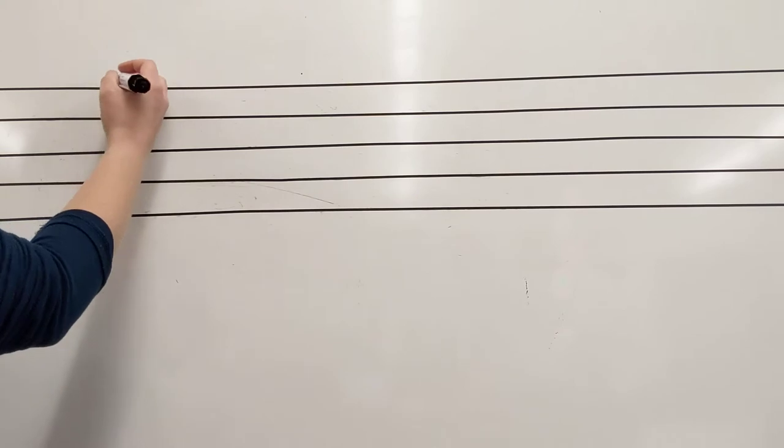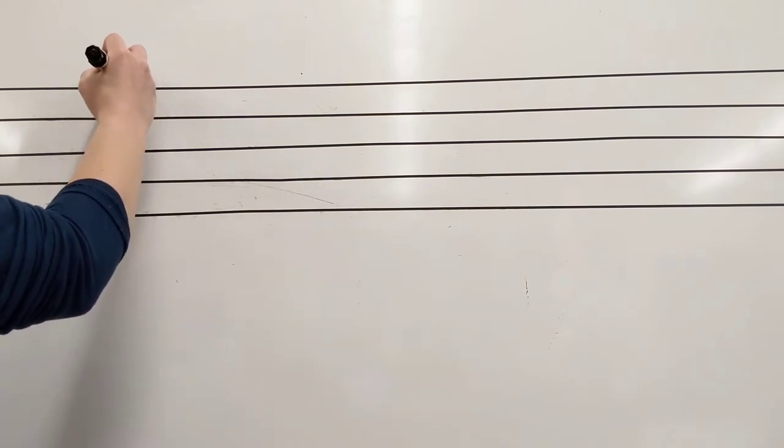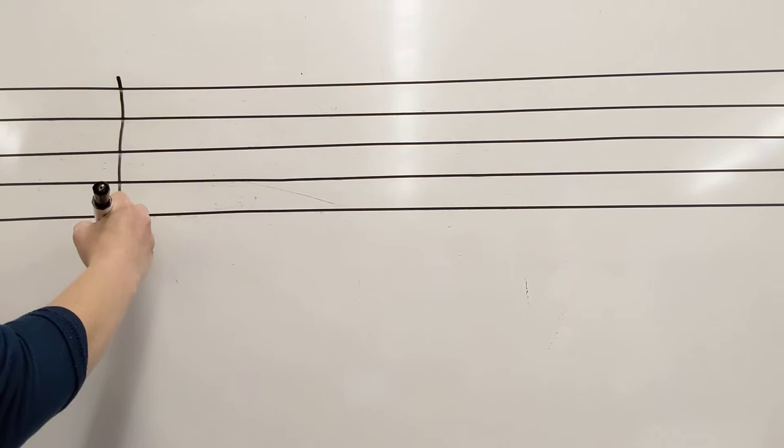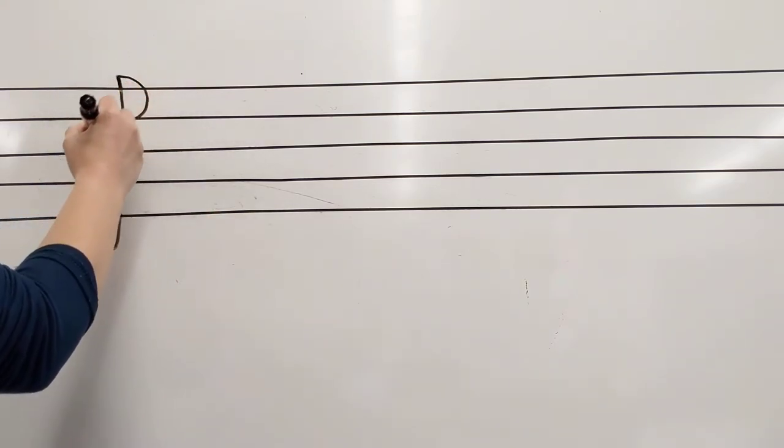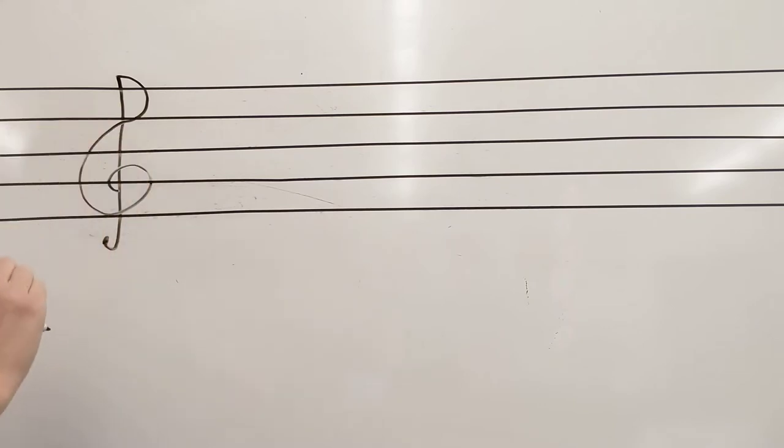And to show that it is for violin, I'm going to draw a treble clef. So I'm going to make a little line with the tail, make it into a P, and then hook a G onto that. So there's my treble clef. Notice it's not perfect, and yours doesn't have to be either.